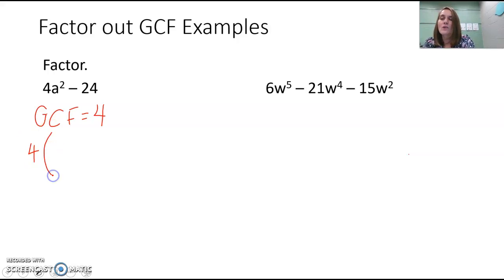And if we do that, what you want to think through your head, I'm going to write it on here, is that when you take out 4, you're doing multiplication backwards. You're doing the distributive property backwards.